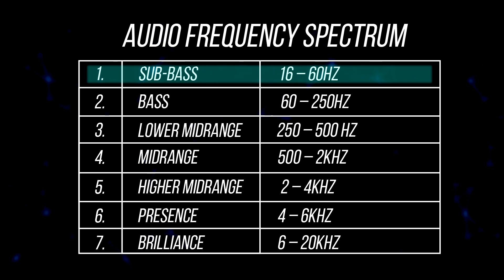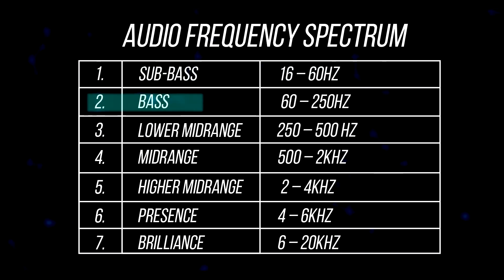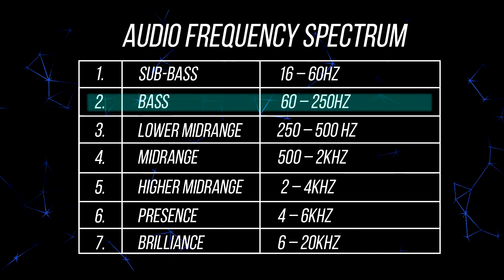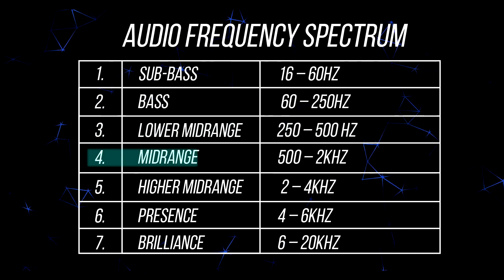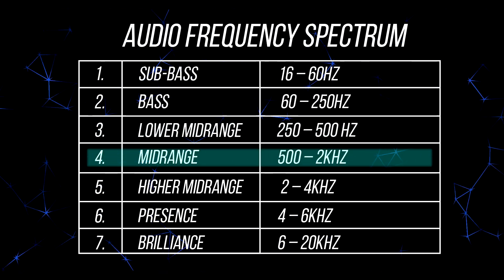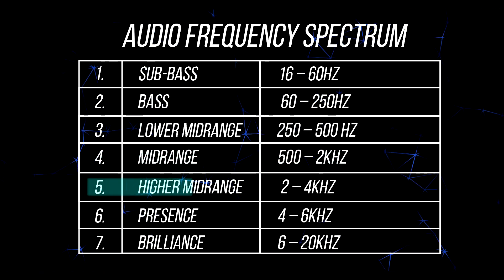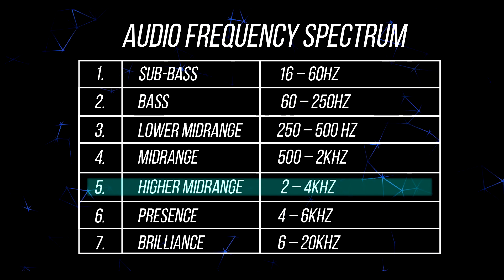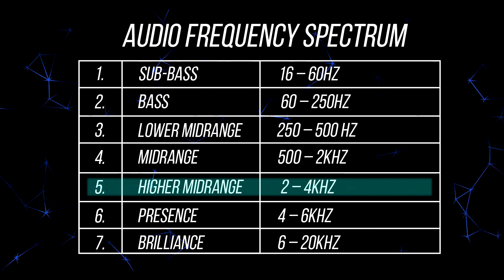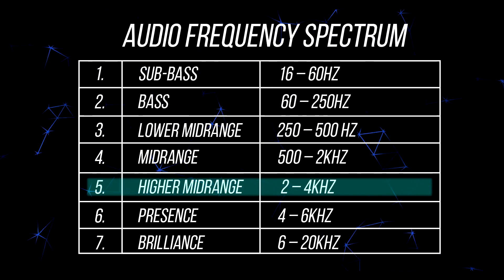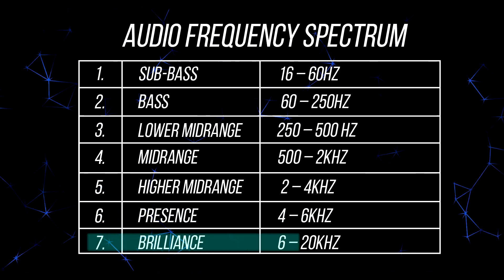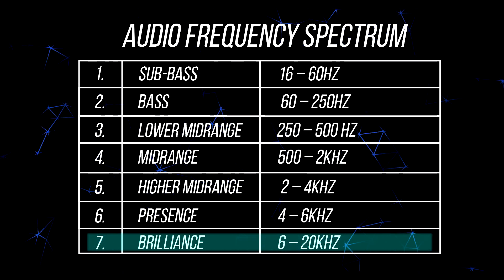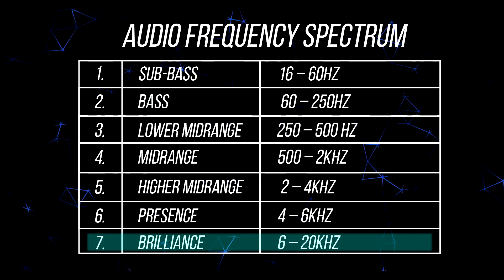Sub-bass is a frequency which is more felt rather than heard — it's the vibration you feel when you listen to a track. Bass is the fatness or thinness of the overall audio profile. Lower mid-range adds clarity to the bass. Mid-range is how strong an instrument sounds in the overall mix. Higher mid-range is all about vocals and needs to be fine-tuned precisely. Presence defines the overall clarity of sound, while brilliance adds a layer of audio clarity to the overall audio signature.